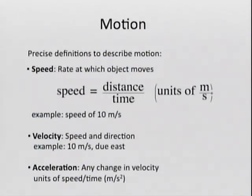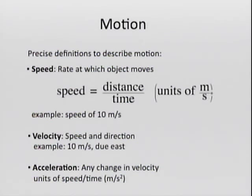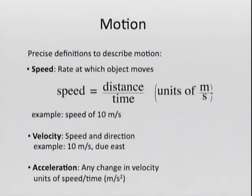To describe motion, there are three things to keep in mind. One is speed — the rate at which objects move. So 10 meters per second, or 60 miles per hour driving on a highway. It doesn't tell you the direction of motion, just how big the motion is, how much distance you travel in a certain time. If you add a direction to that — for example, 10 meters per second traveling east or in the direction of going to Disneyland — then you're talking about velocity. Velocity is a measurement of distance traveled in a unit of time with a direction associated with it.